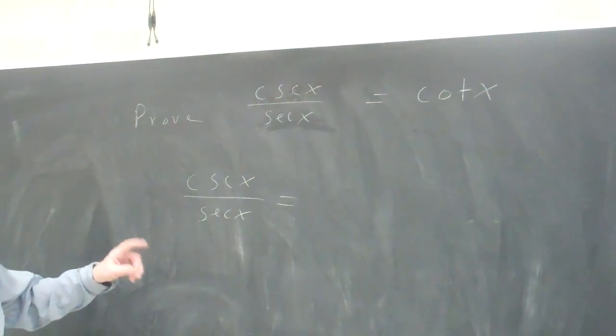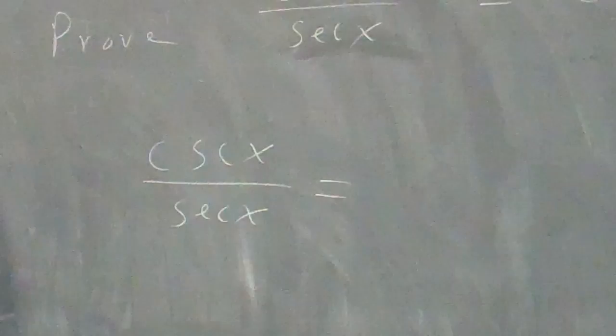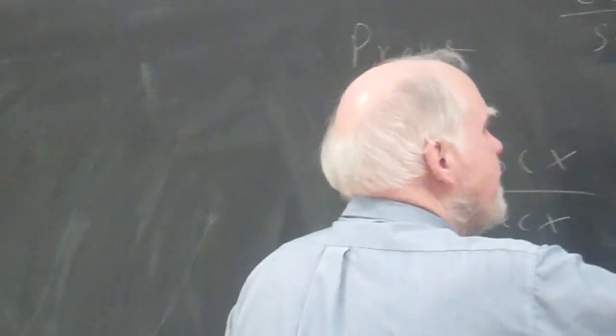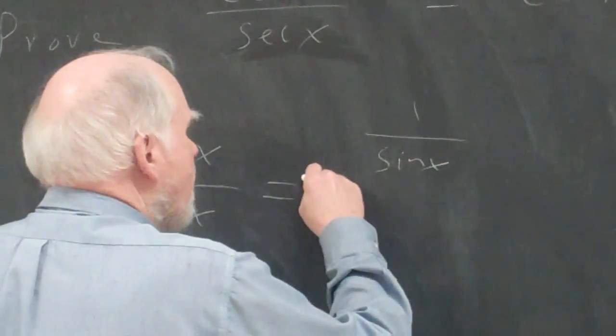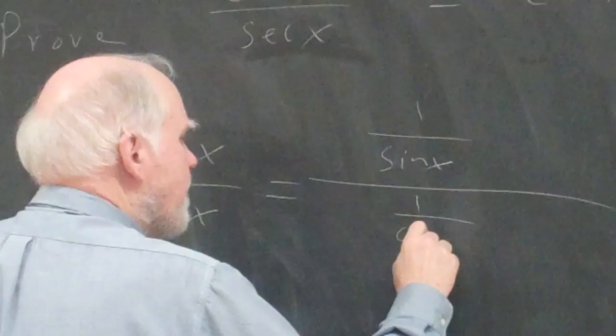Now, a main strategy: you have something like this, you don't know what to do, you change everything to sines and cosines, and hopefully life will get better. Well, we know the cosecant is 1 over sine of x, and we know the secant is 1 over cosine x.